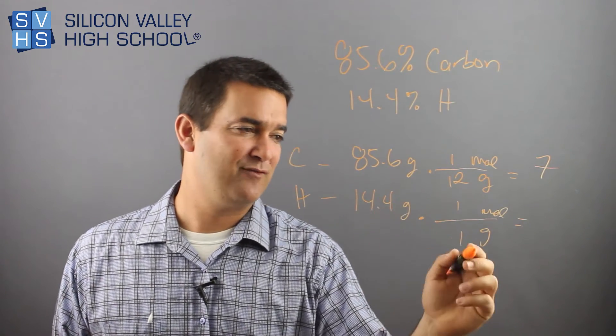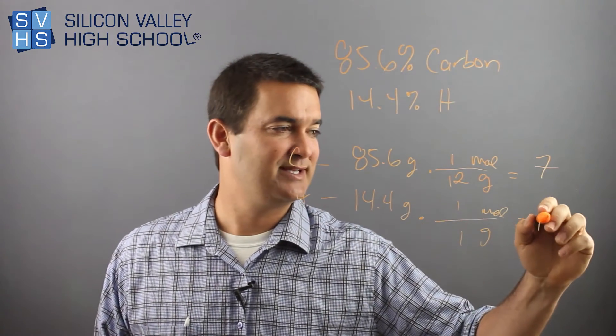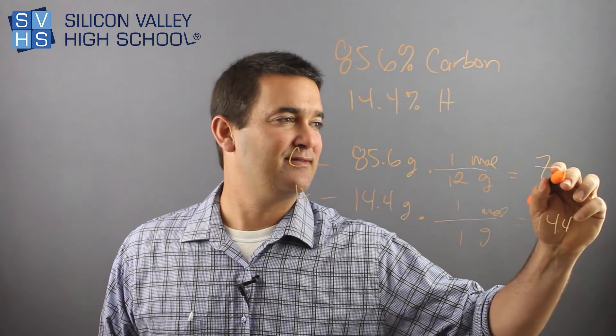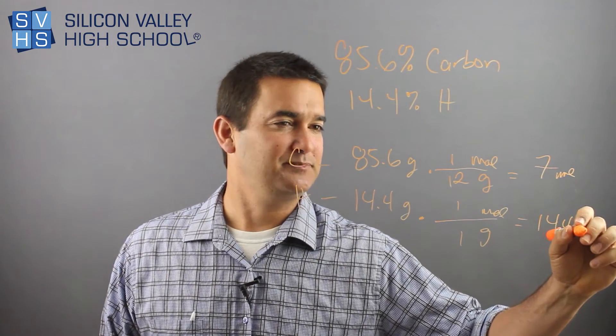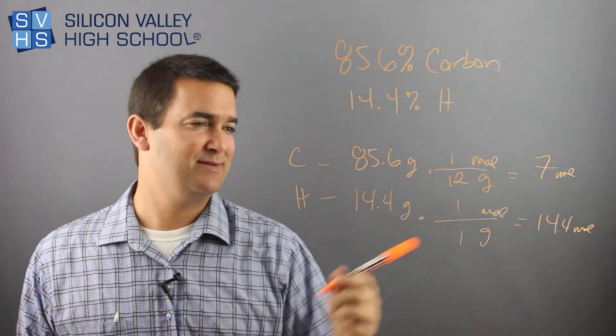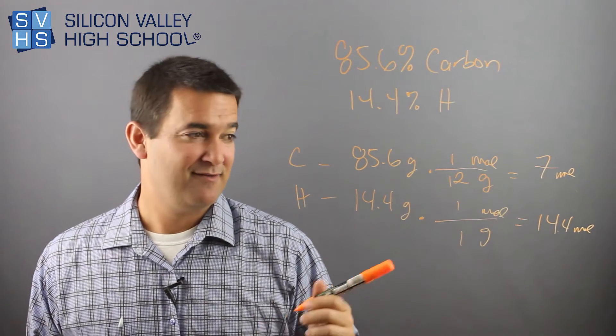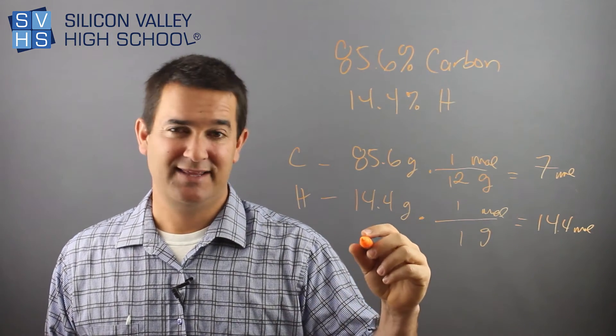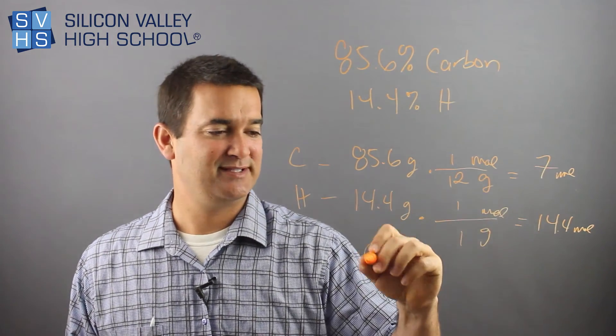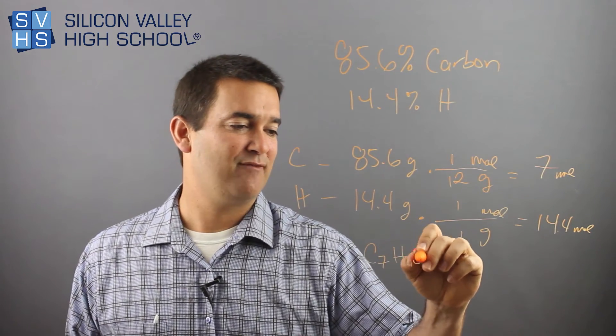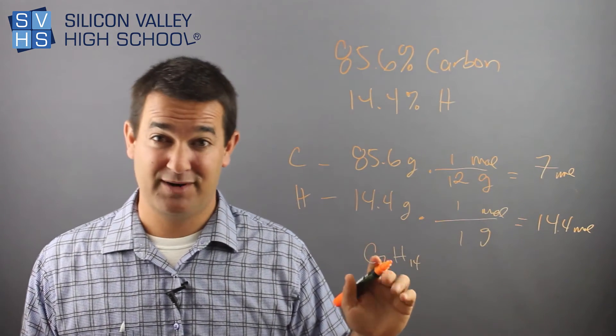And then if you do this, 14.4 divided by one is obviously 14.4. So we have seven moles of carbon and we have 14.4 moles of hydrogen. From there, all you do is really say this. Well, now this would be C7H14, close enough.